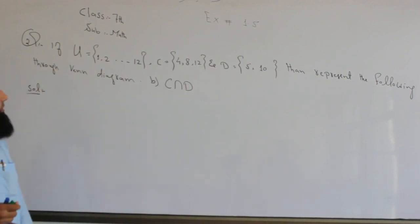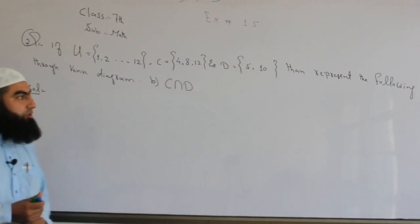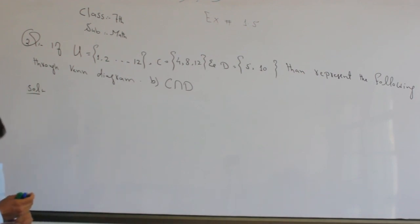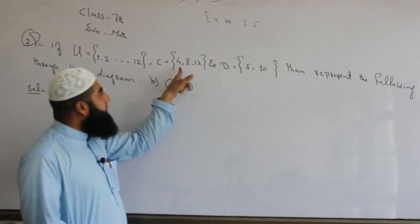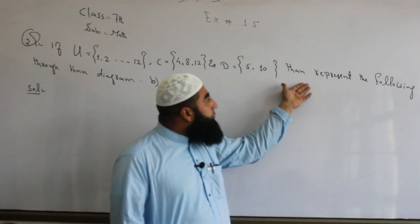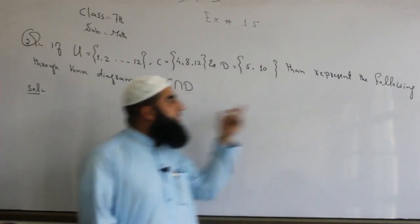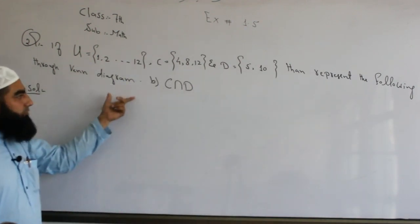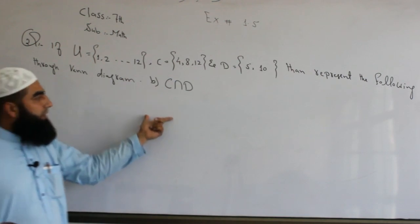Bismillahirrahmanirrahim. Class 7, subject maths, exercise number 1.5, question number two. The question asks: U set record the 1 to 12, C set record the 4, 8, 12, D set record the 5, 10, then represent through Venn diagram.